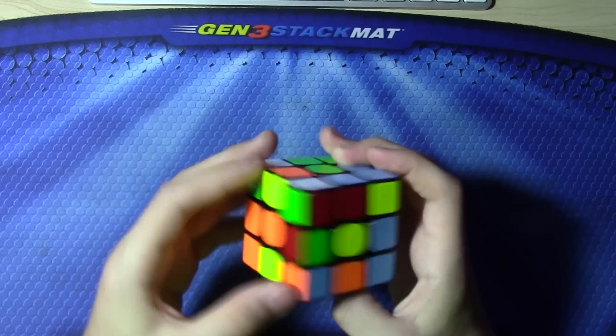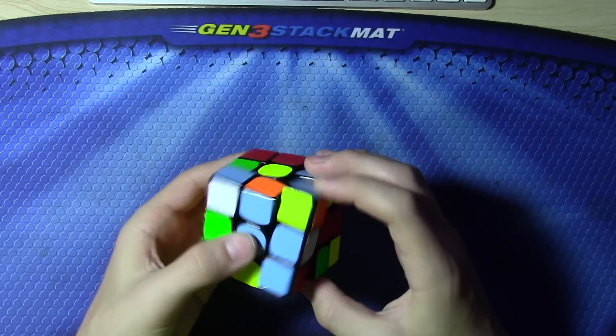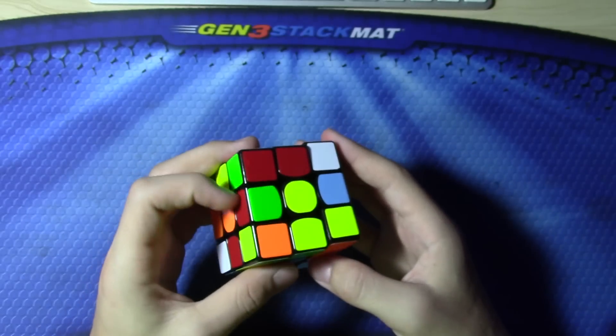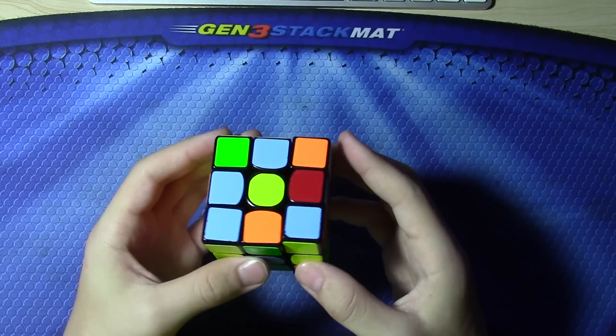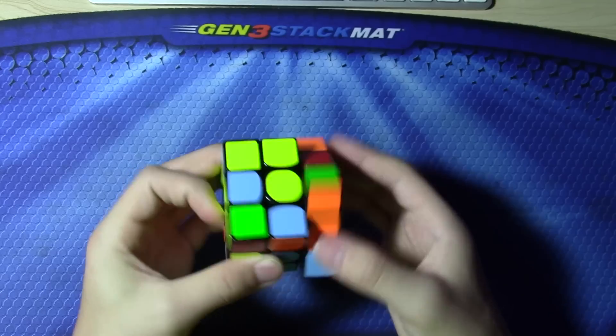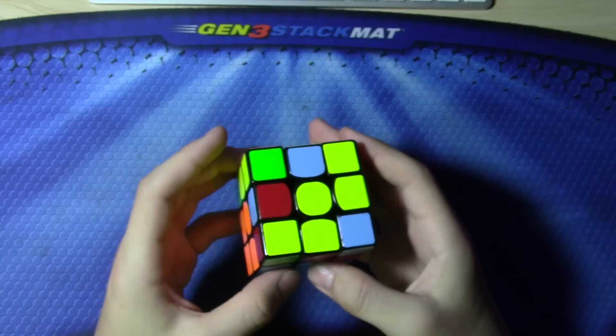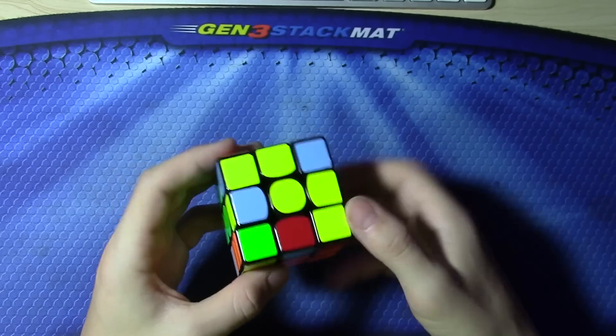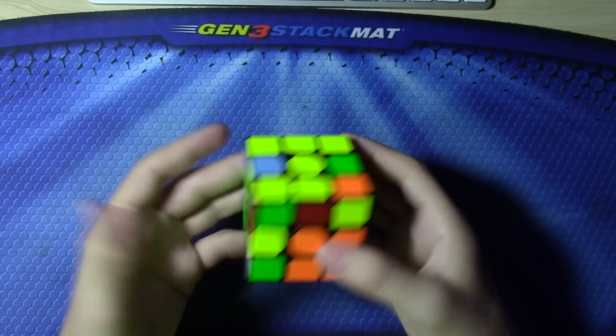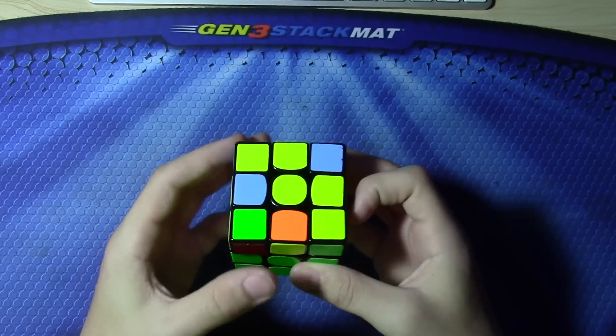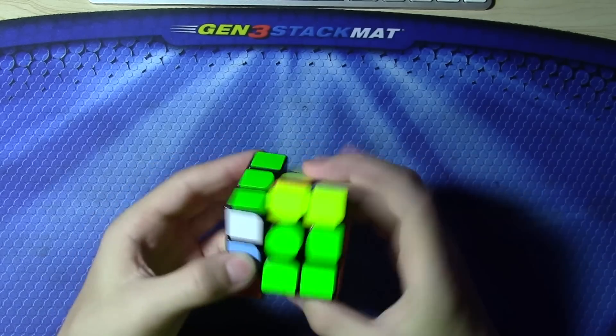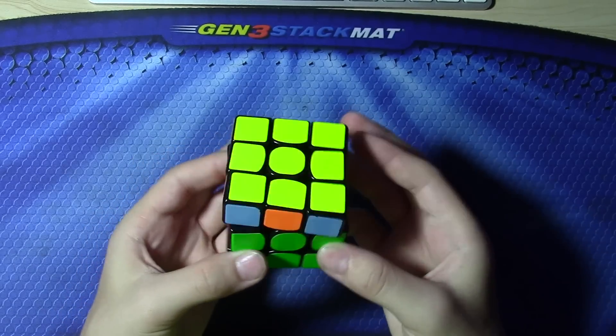I also saw that pair. So insert that, and I'm going to go for this pair first. And then I do this pair, then rotate this pair, and then finally this pair. Then OLL, and U perm.